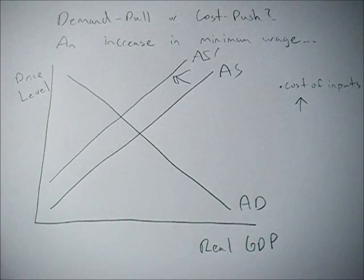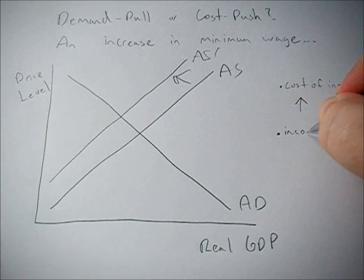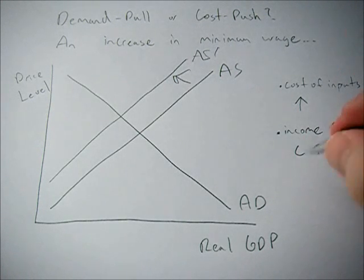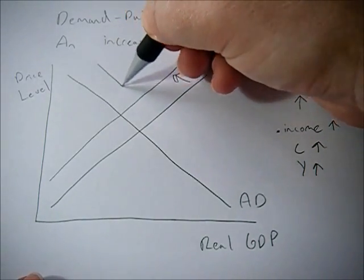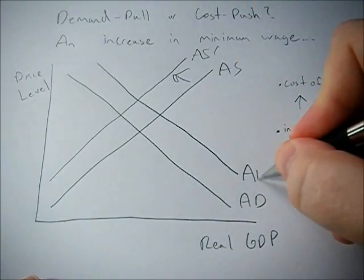Also, what happens when minimum wage goes up — you can argue that income goes up. And if income goes up, we're going to see consumption go up. And if consumption goes up, we're going to see a shift in the aggregate demand curve, so aggregate demand increases.